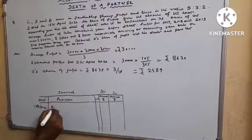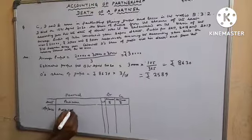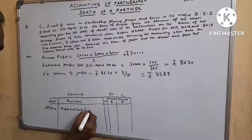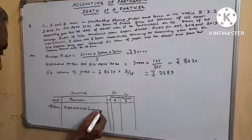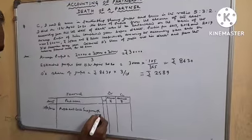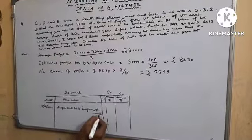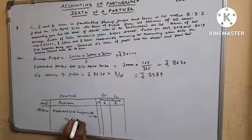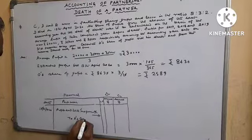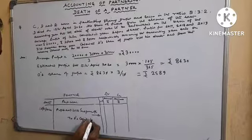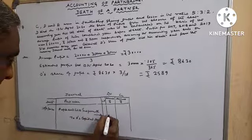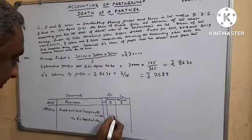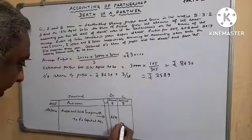Journal entry: Profit and Loss Suspense Account debit 2,589.